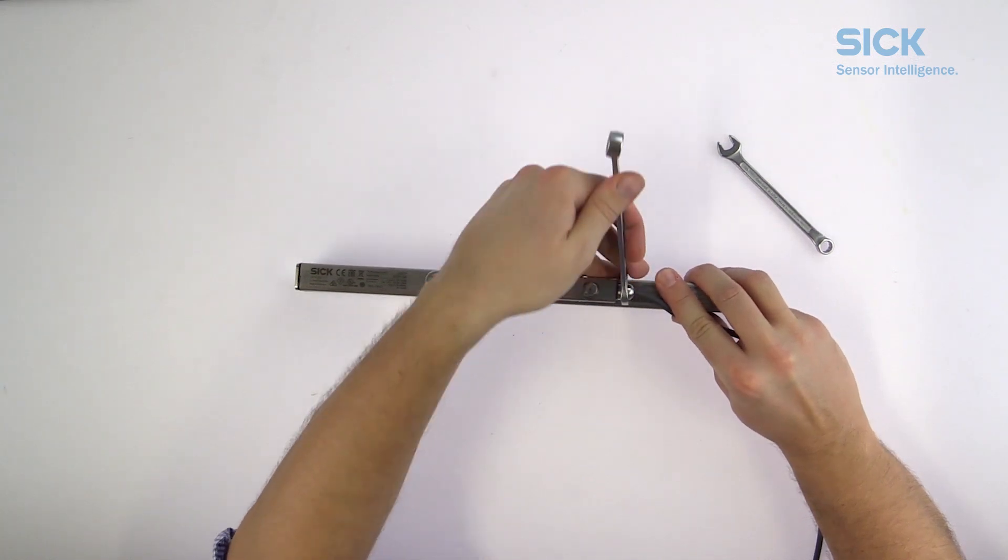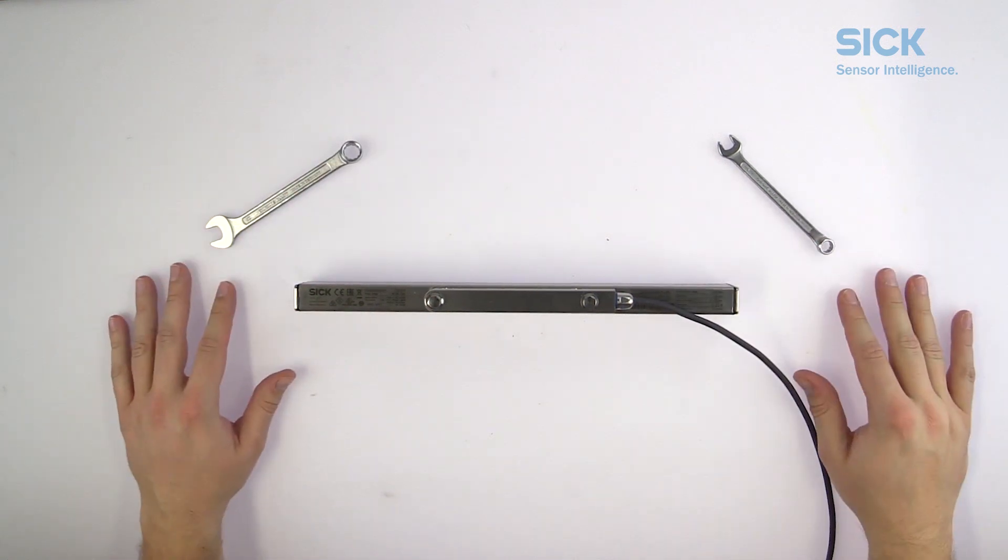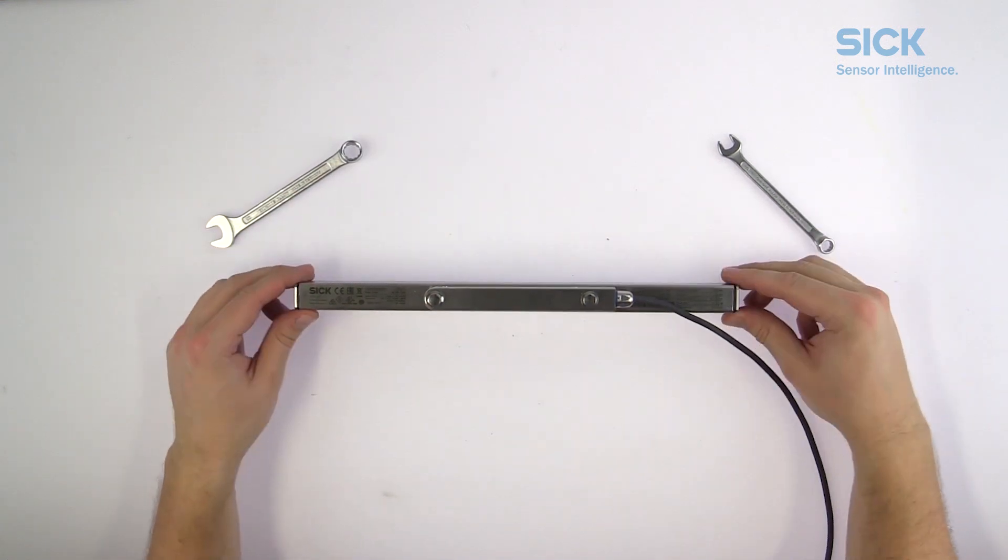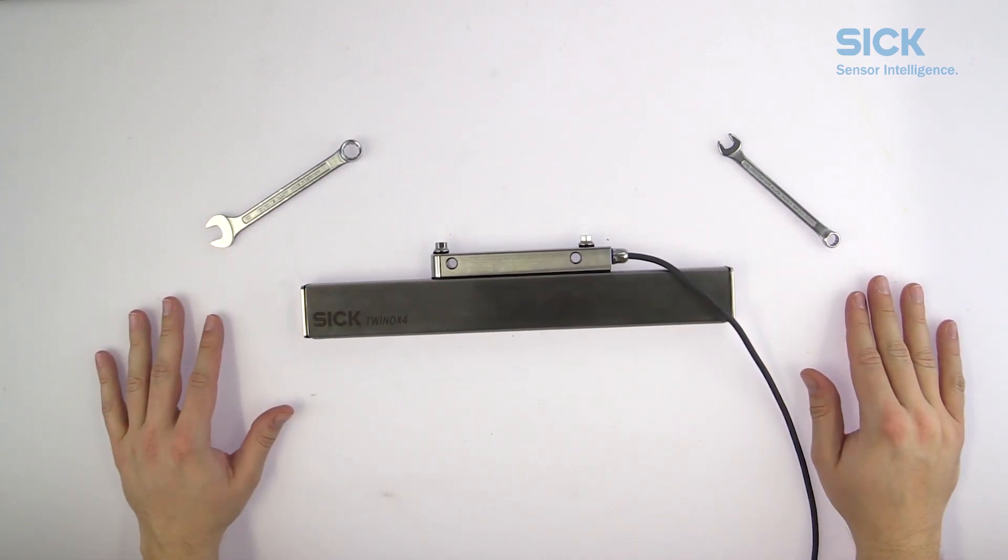So now we have attached the mounting bracket to our Twinox sticks. You are now ready to actually mount the Twinox 4 to the machine. But that's another story, which we are going to tell you in the next clip of our tutorial. Thanks for watching.